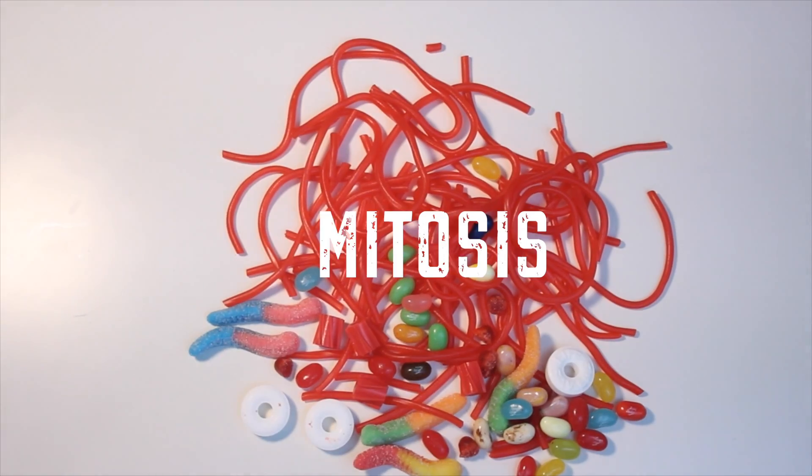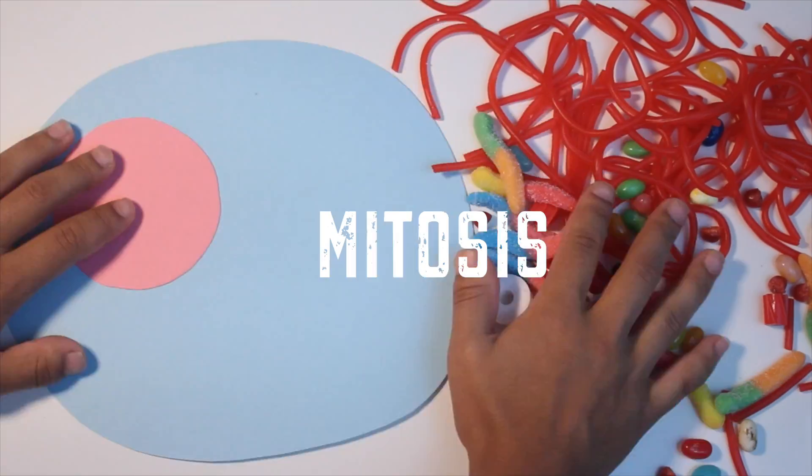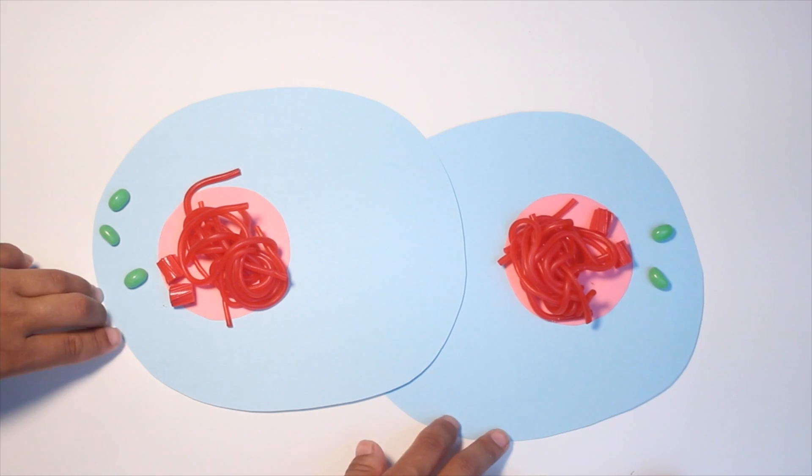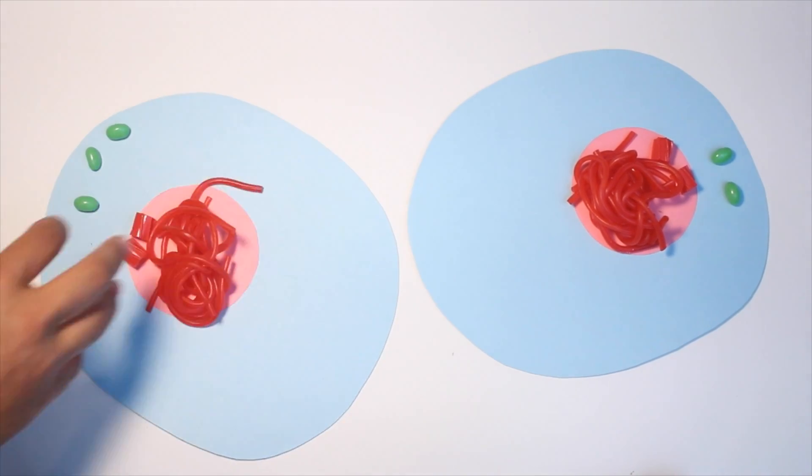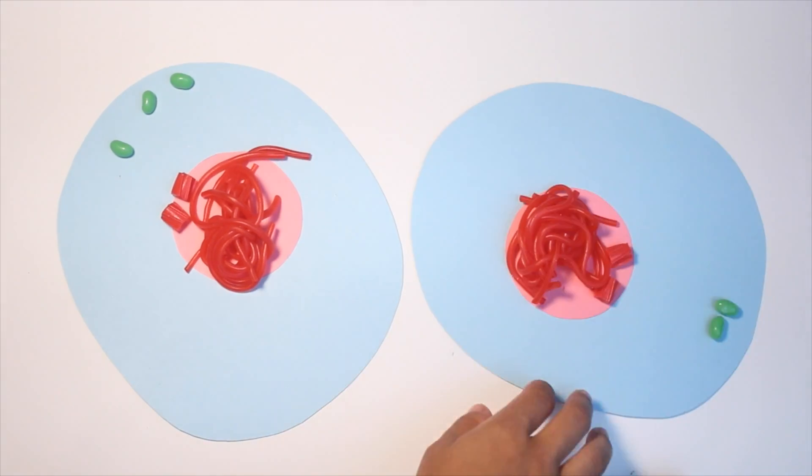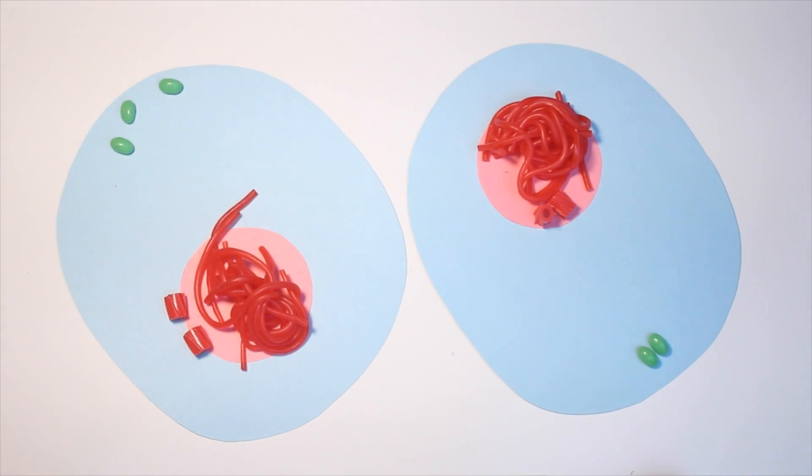Today we're talking about mitosis, and mitosis is not an ugly toe fungus. No, it is actually when one cell splits into two cells, which we call daughter cells. It basically clones itself so that there's someone to inherit the world when they're gone. You understand? Okay, let's start.